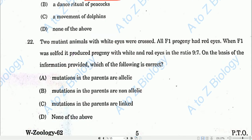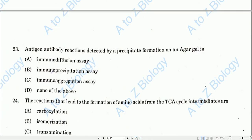Question number twenty-two: Two mutant animals with white eyes were crossed, and all F1 progeny had red eyes. When F1 was selfed, it produced white and red eyes in a 9:7 ratio — the complementary gene ratio. Based on this information, option B is correct: the mutations in the parents are non-allelic.